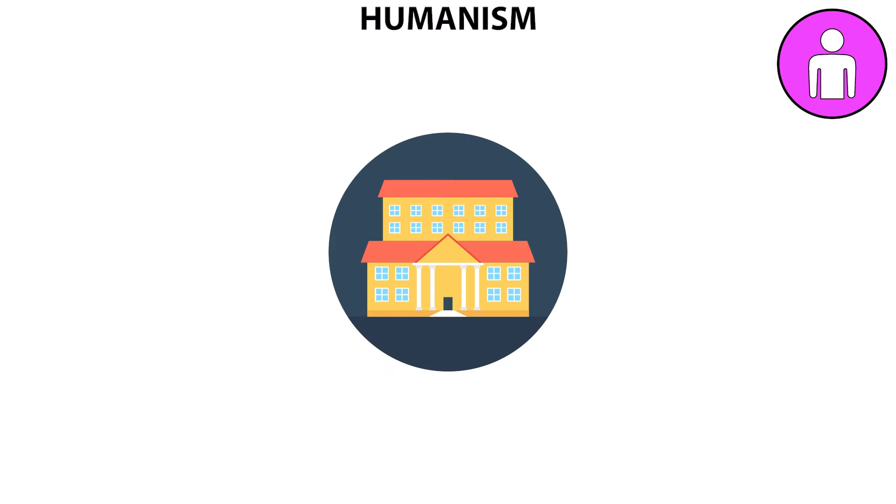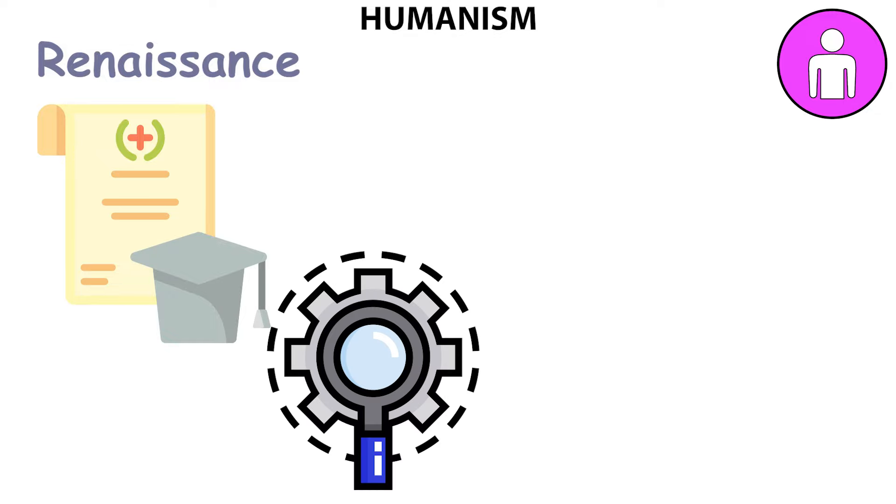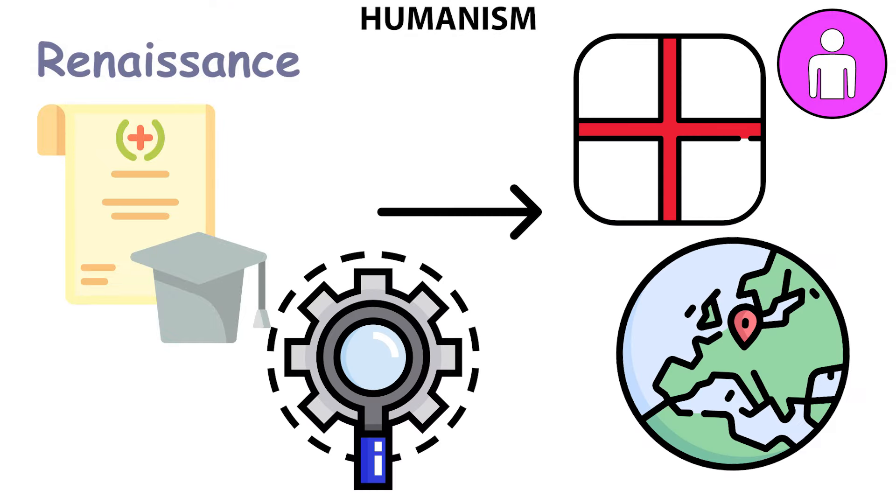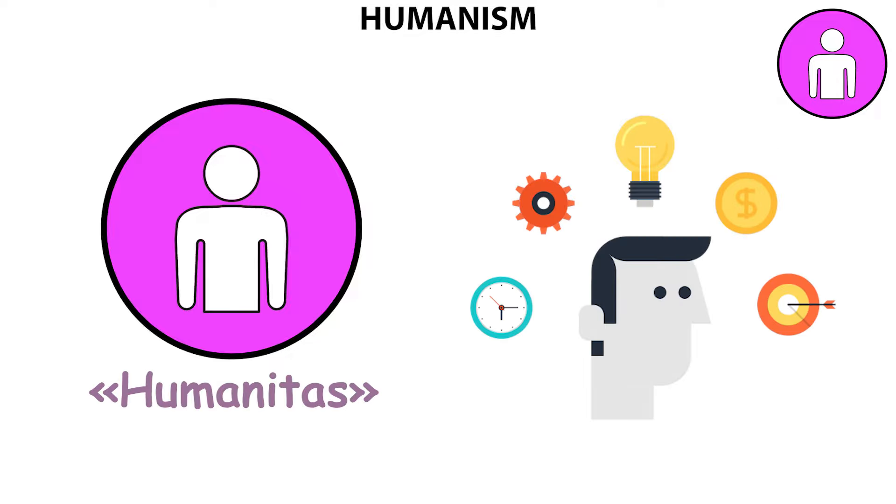Humanism is a philosophical school of thought that places a strong emphasis on human values and potential. Originating during the Renaissance, it was a system of education and mode of inquiry that later spread throughout Europe and England. Humanism is based on the ideal of humanitas, which means the development of human virtue in all its forms.